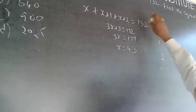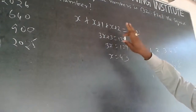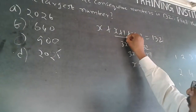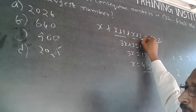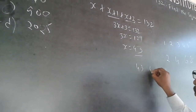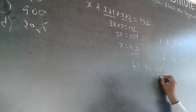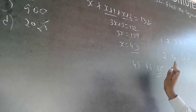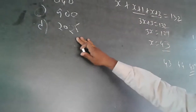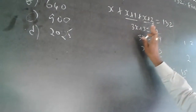Now, we need to find the square of the largest number. Since x = 43, the three numbers are 43, 44, and 45. The largest number is 45, so we square it: 45² = 2025. That is the answer.